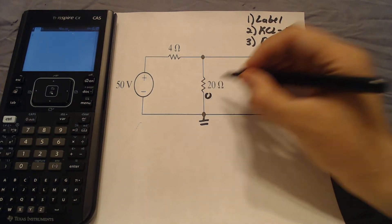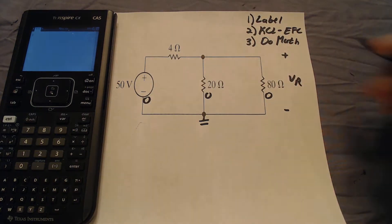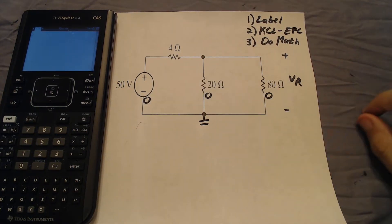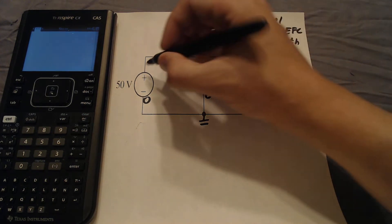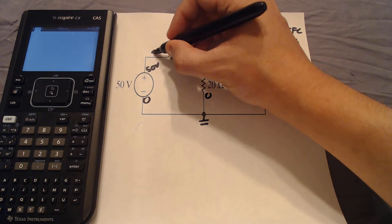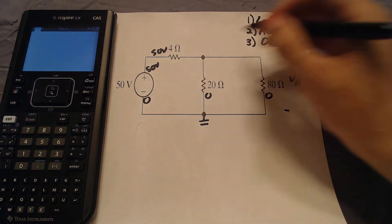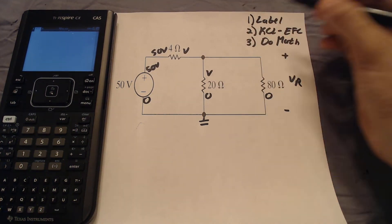So first, I'm going to label this bottom node, and I'm going to say that's our ground. Every circuit needs a ground. It doesn't have to be the bottom most node of a circuit, it could be any node, but I picked my bottom most node. So this node up here is going to be 50 volts due to the voltage source. And this top right node, I'm just going to call V because it has an unknown voltage.